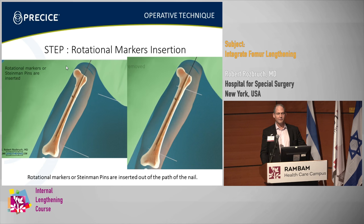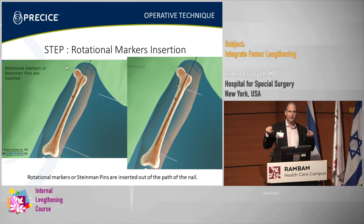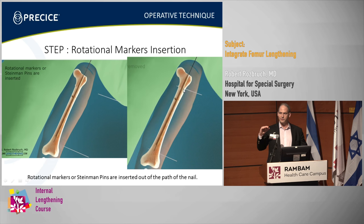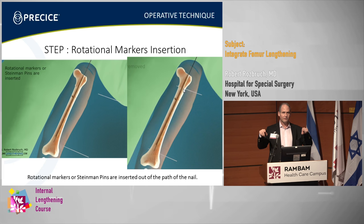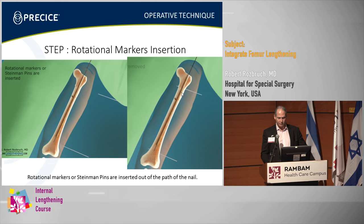At the end of the reaming, I tend to put in my rotational markers — Steinmann pins, usually 2.8 or 3.2 millimeter. The proximal one is posterior to the nail at the level of the lesser trochanter; the distal one is usually distal. If you're just trying to prevent rotational deformity, I put them in parallel to each other. If I'm trying to correct rotational deformity, I put them in with the amount of axial rotational difference that I want to correct.